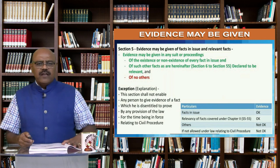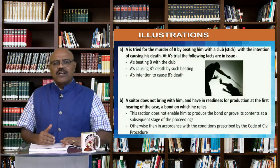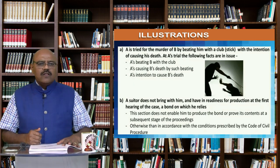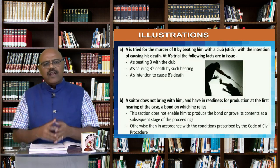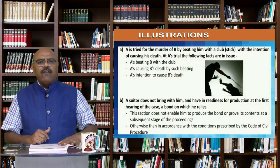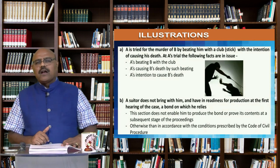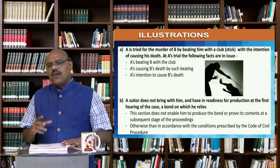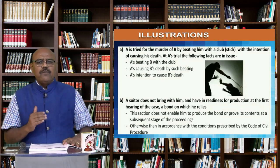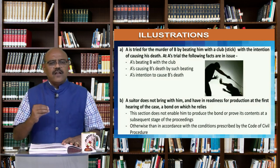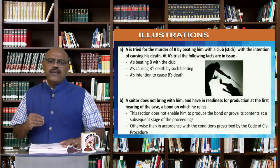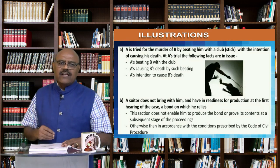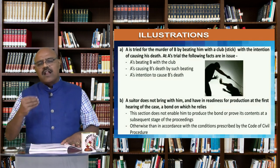Now there are two illustrations given — the first is a criminal one and the second is a civil one. The illustrations are given in the book and are very easy to understand. A is tried for the murder of B by beating him with a stick with the intention of causing his death. At A's trial, the following facts are in issue: A's beating B with the stick, A causing B's death by such beating, and A's intention to cause B's death.